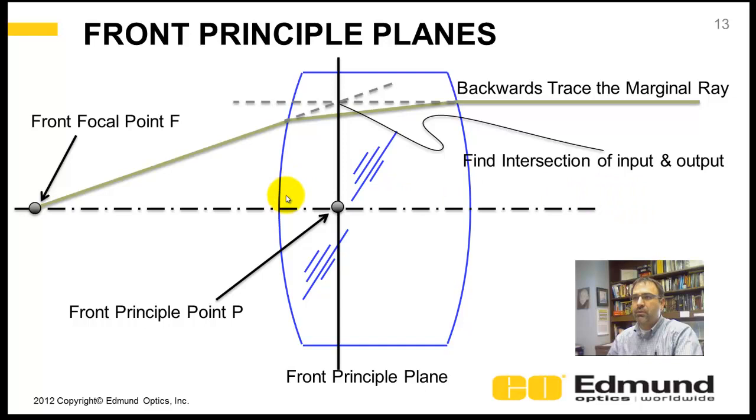Likewise, you could do the front principal plane by backwards ray tracing this marginal ray coming from the right to the left. You get your front focal point and your front principal plane.